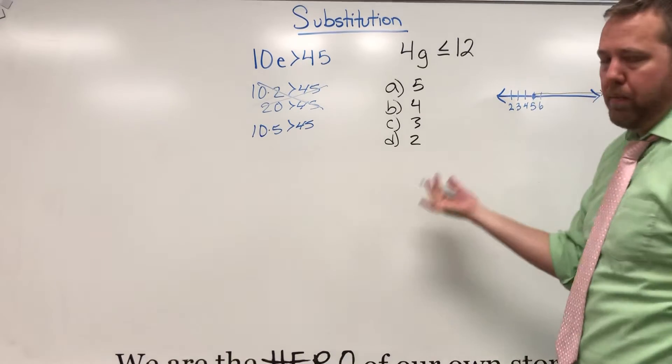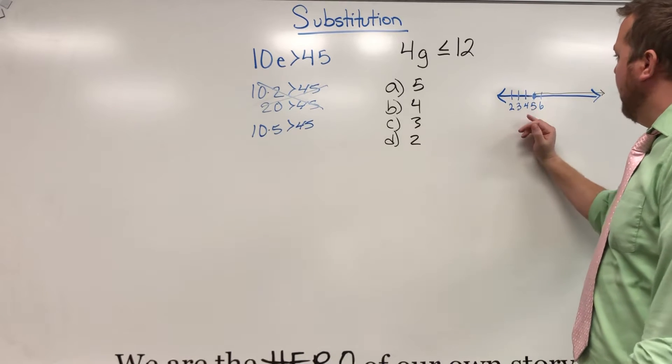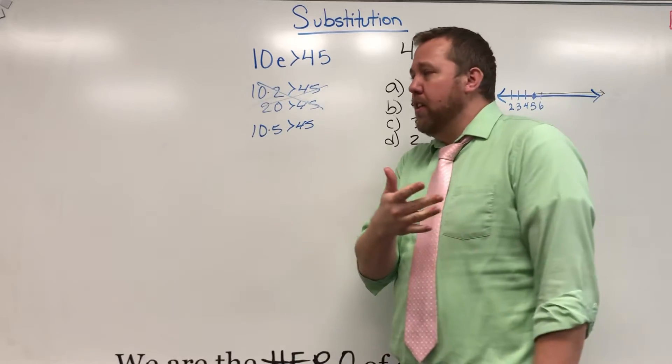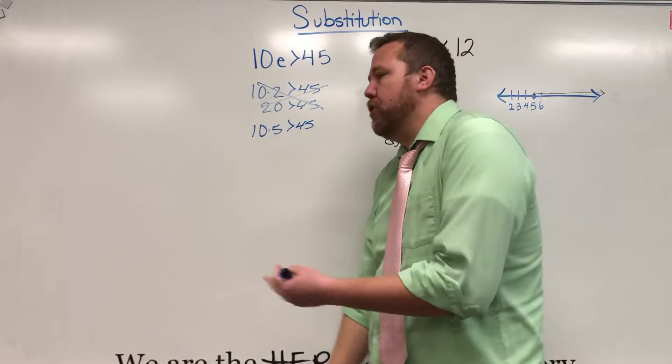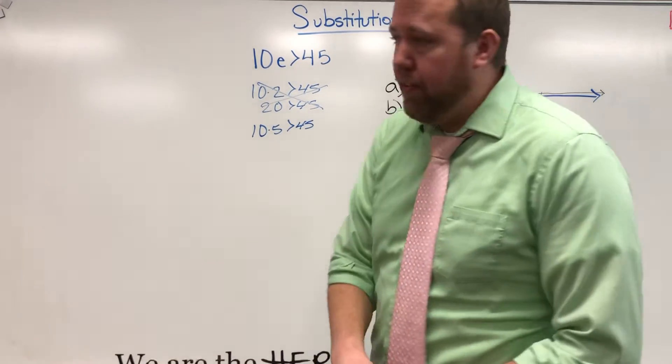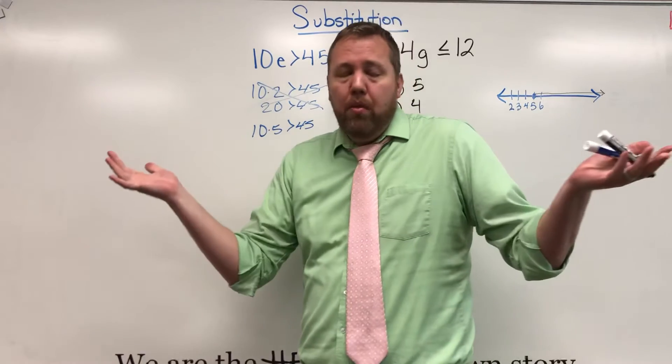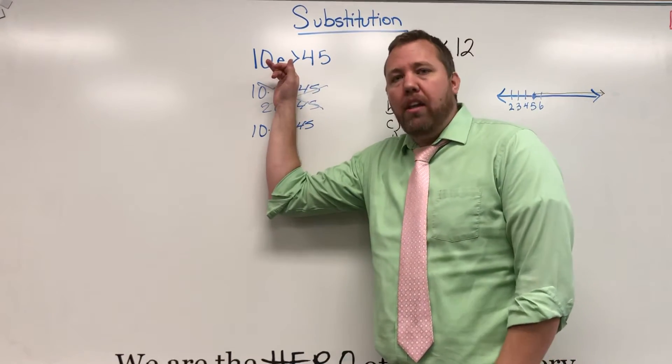But we know 5 works, and every single number that is greater than 5 is going to work. On the whole number spectrum, any number greater than 5 will work for this. So I could choose any of those numbers. I could choose 8. I could choose 42 and a half. I could choose 1,326. Whatever it is that you want, that will make this inequality true.